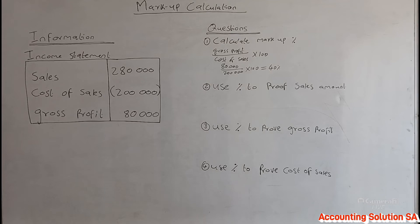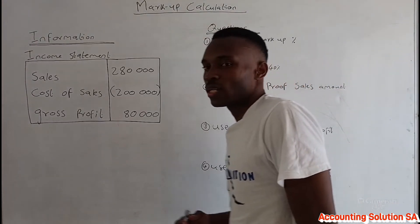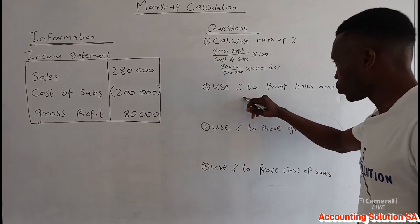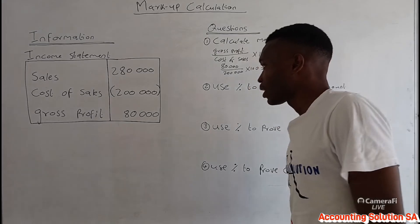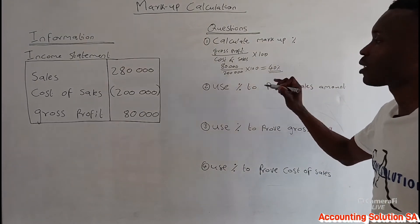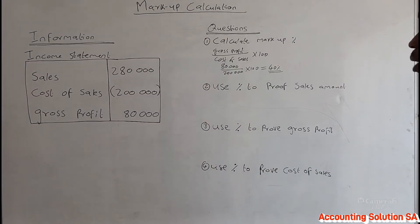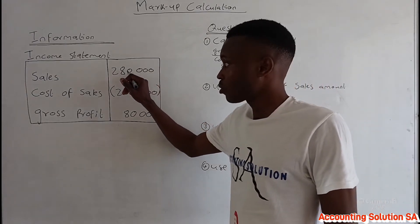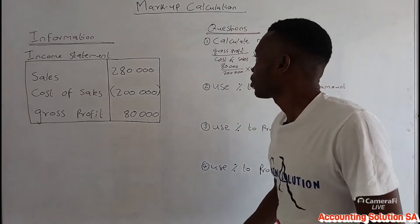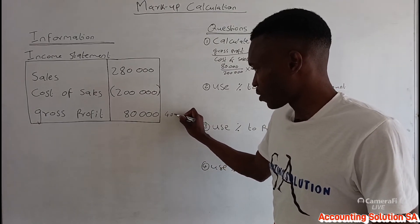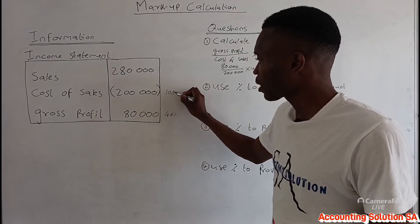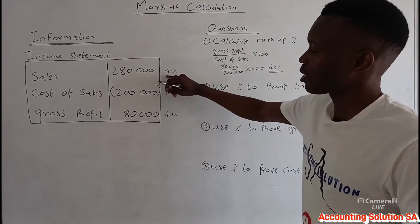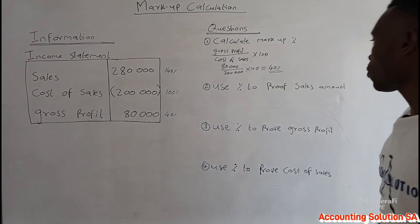Now let's assume you have been given a markup and they want you to use that percentage to prove the amount of sales. We are going to use this markup to calculate sales, cost of sales, and gross profit. When calculating sales, our gross profit is 40 percent, which means cost of sales is 100 percent, and sales is 140 percent — because sales includes both the profit and the cost.